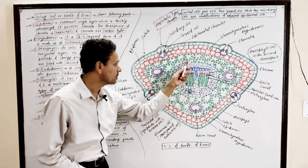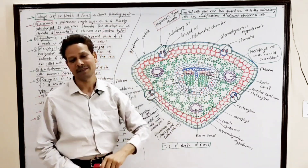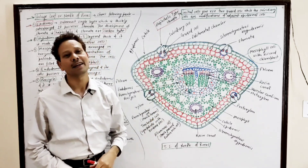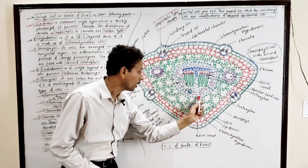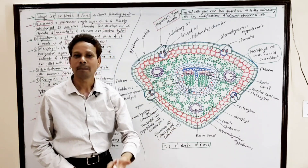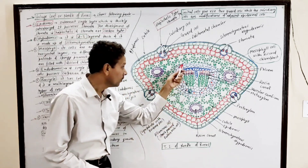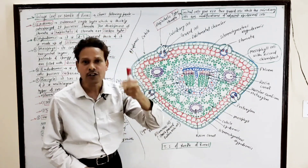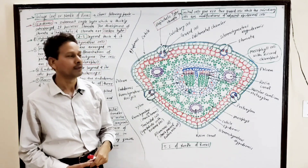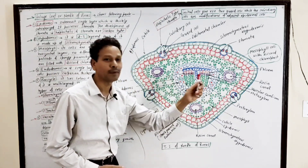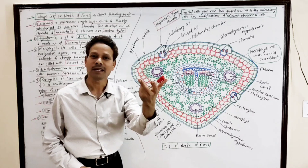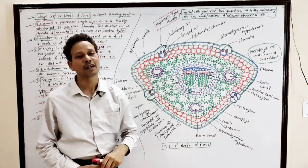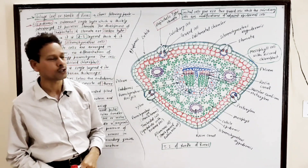The next part is the endodermis. Note down: this endodermis is a single layer consisting of parenchymatous cells. In the radial wall, lateral wall, and tangential wall of this endodermis, Casparian strips are present, which act as biological barriers — checkposts.